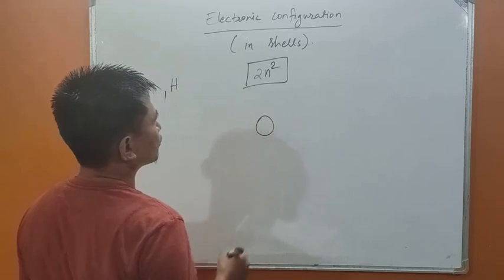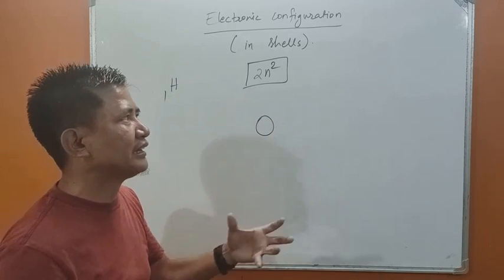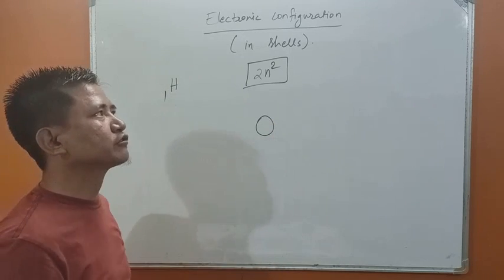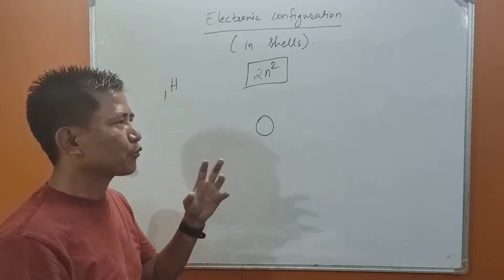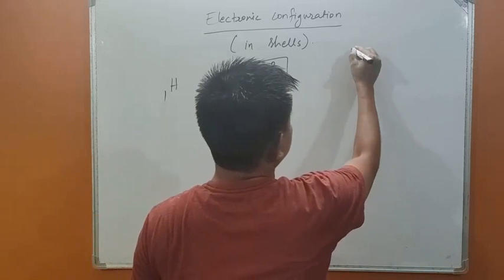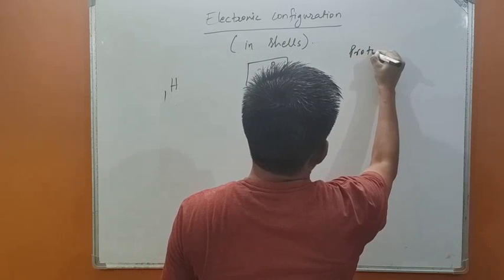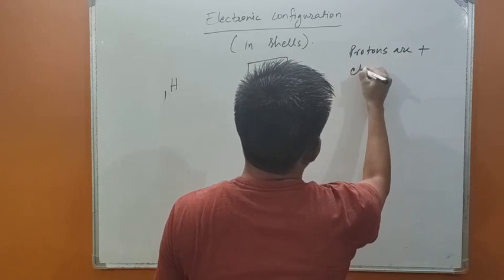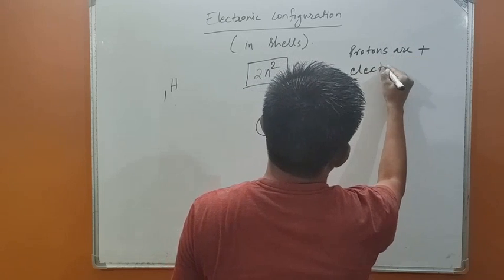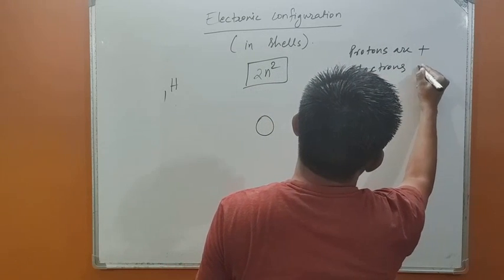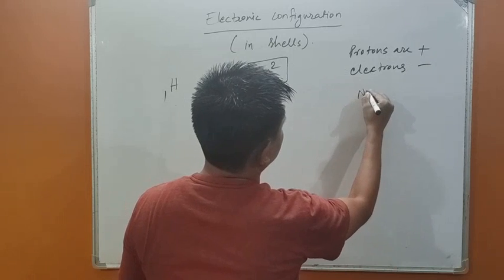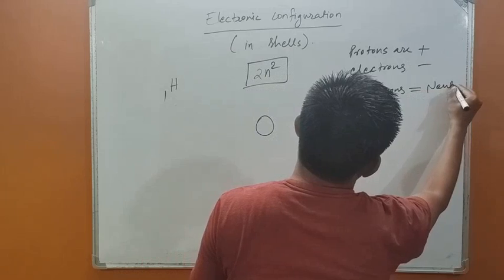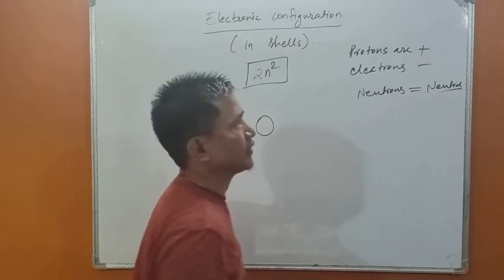Protons are positively charged, electrons are negatively charged, and neutrons are neutral — neutrons do not have any charge.